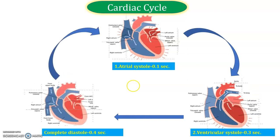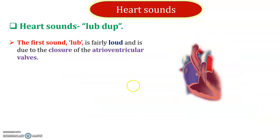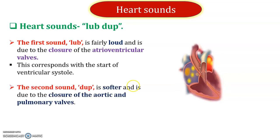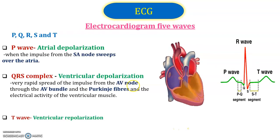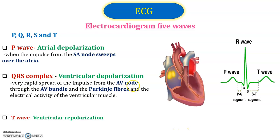The heart produces two sounds. The first sound occurs when the atrio-ventricular valves close, and the second sound occurs when the aortic and pulmonary valves close. Next is the ECG — electrocardiogram — which shows PQRST waves. The signal passes through these waves showing the electrical activity of the heart.